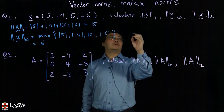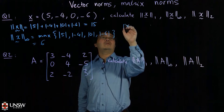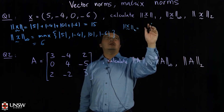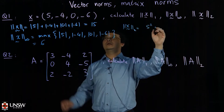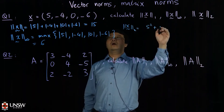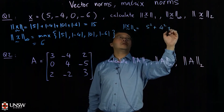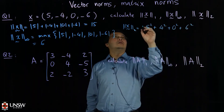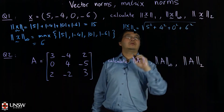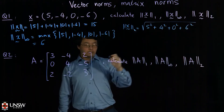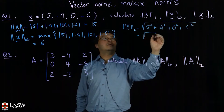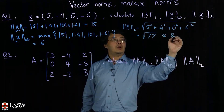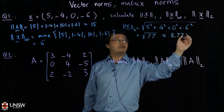For the two norm of the vector x, what you need to do is take the square of all the entries. So 5² + 4² + 0² + (-6)² and then take the square root. It will be equal to square root of 77, which is roughly 8.775.